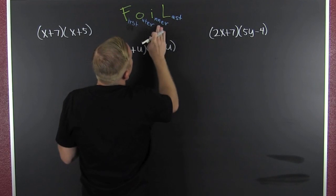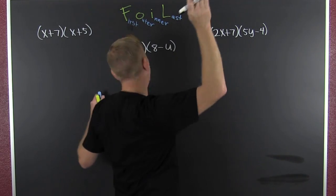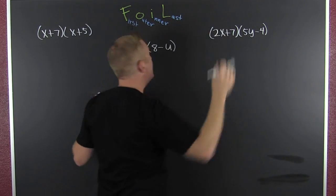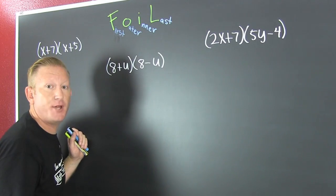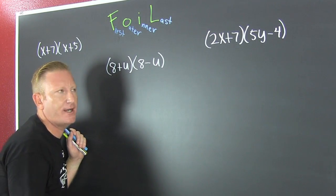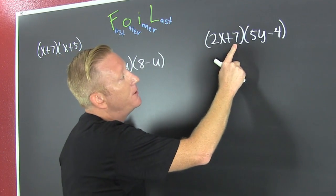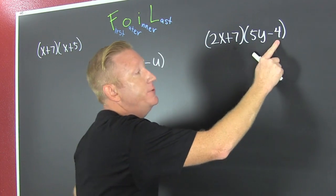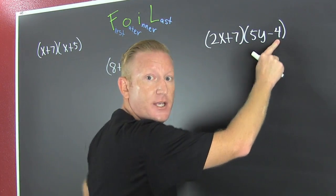First, outer, inner, last. What's it for? It's for multiplying out binomials. What am I talking about? I'm talking about two terms times two terms!